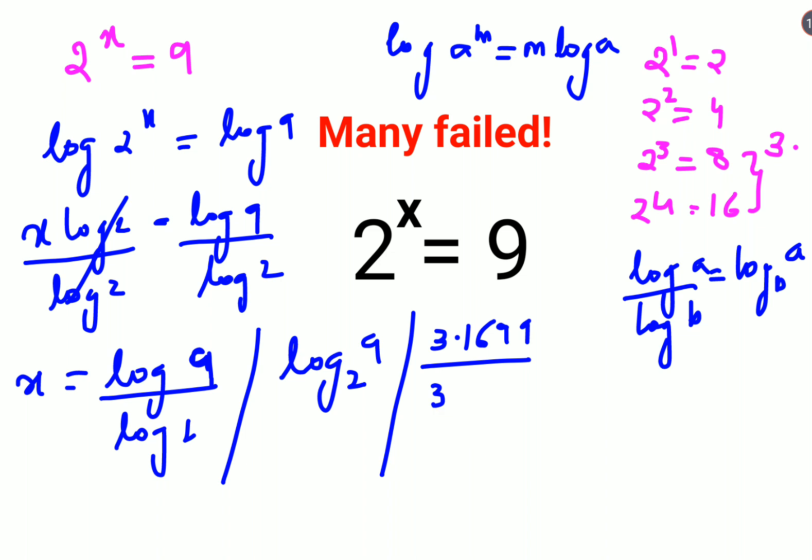Sorry, the value of log 9 is not this. The value of log 9 is 0.954 divided by log 2 value, which is 0.3010. So the final answer for this one will be 3.1699, or I can say 3.17.